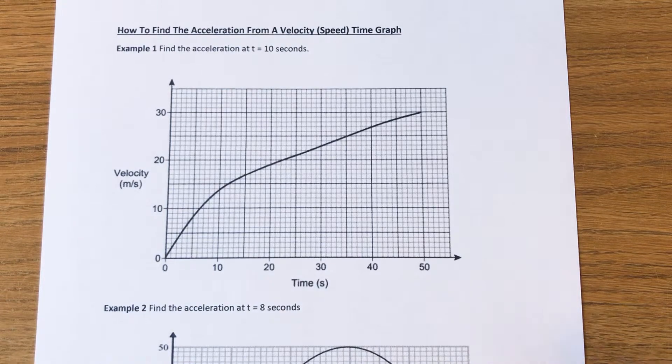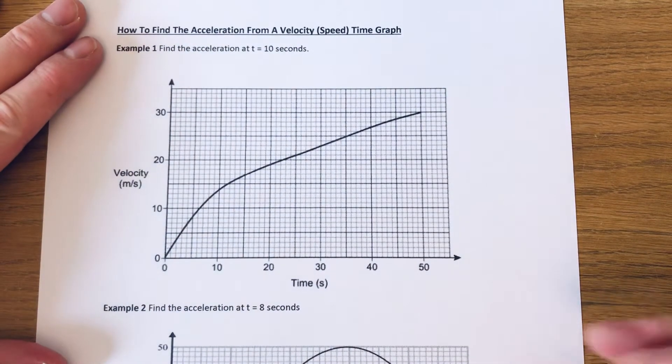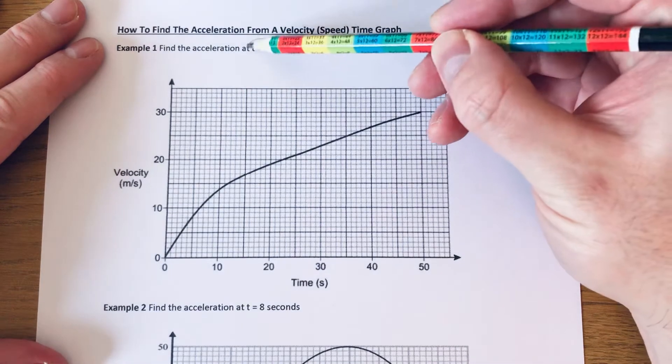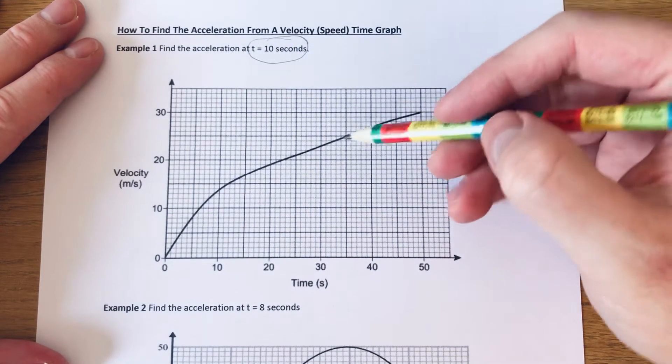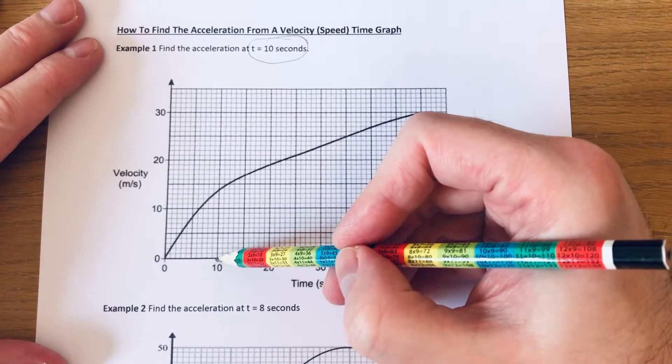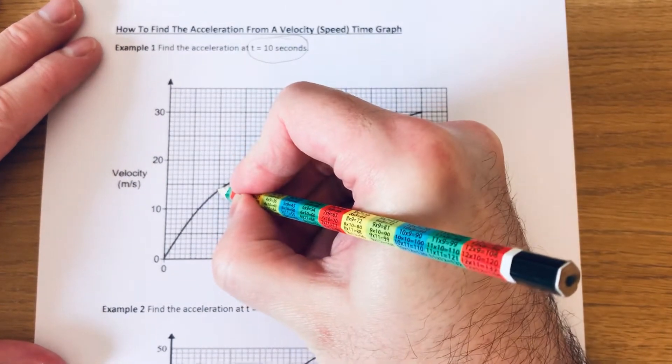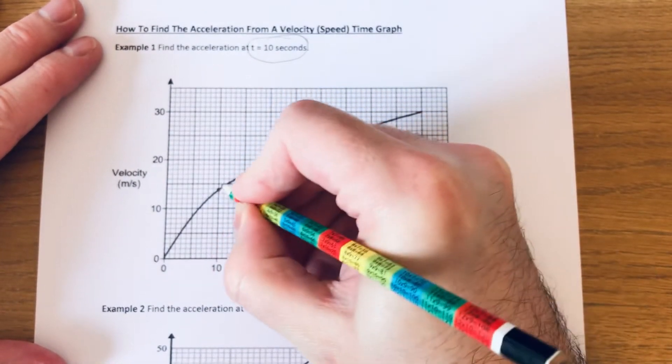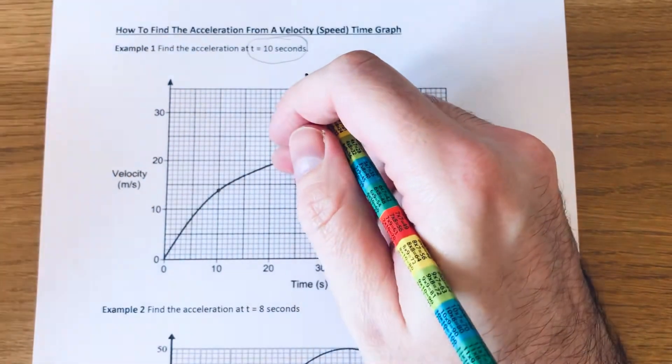Okay, so let's have a look at the first example then. We're going to find the acceleration at t equals 10 seconds. So our time is along the bottom. That's 10 seconds. So if you put a little dot on our curve at 10.